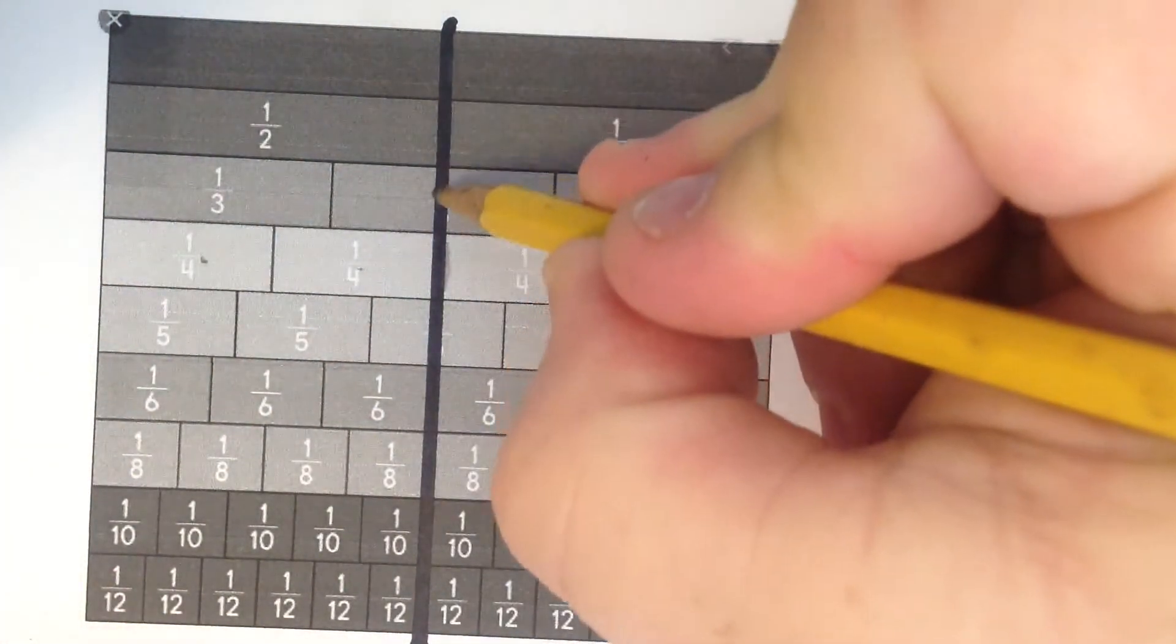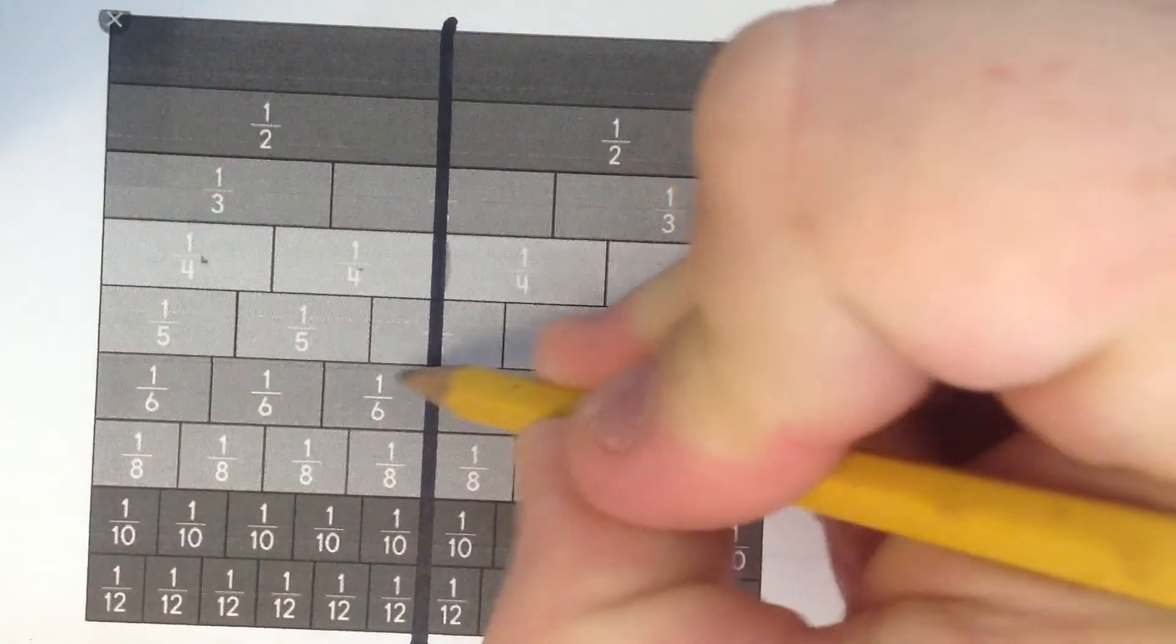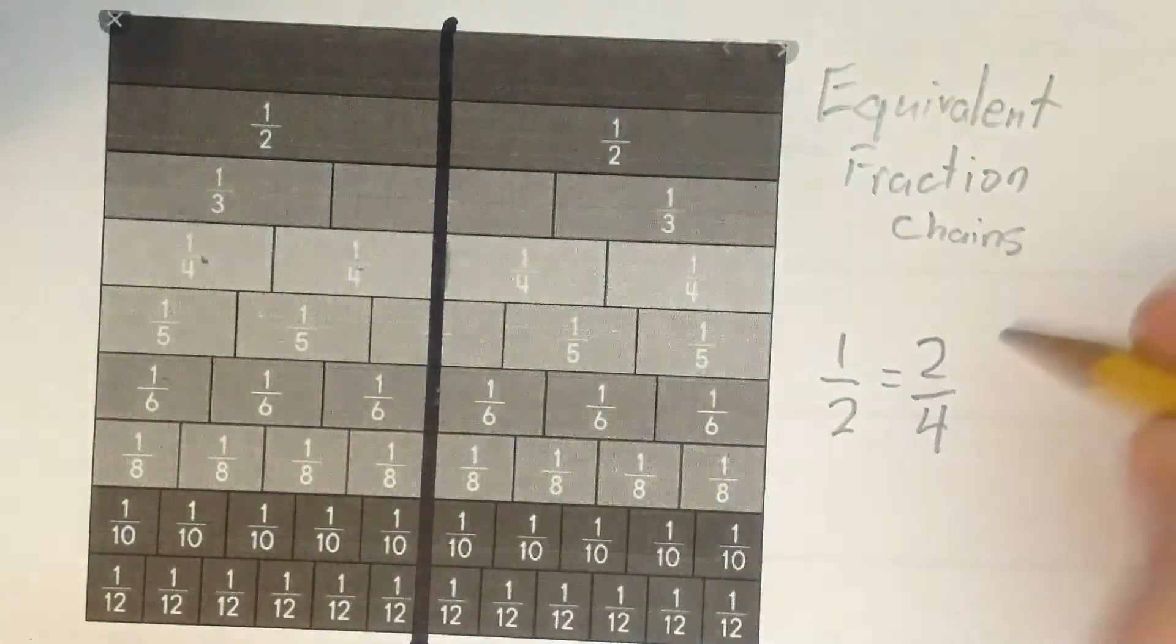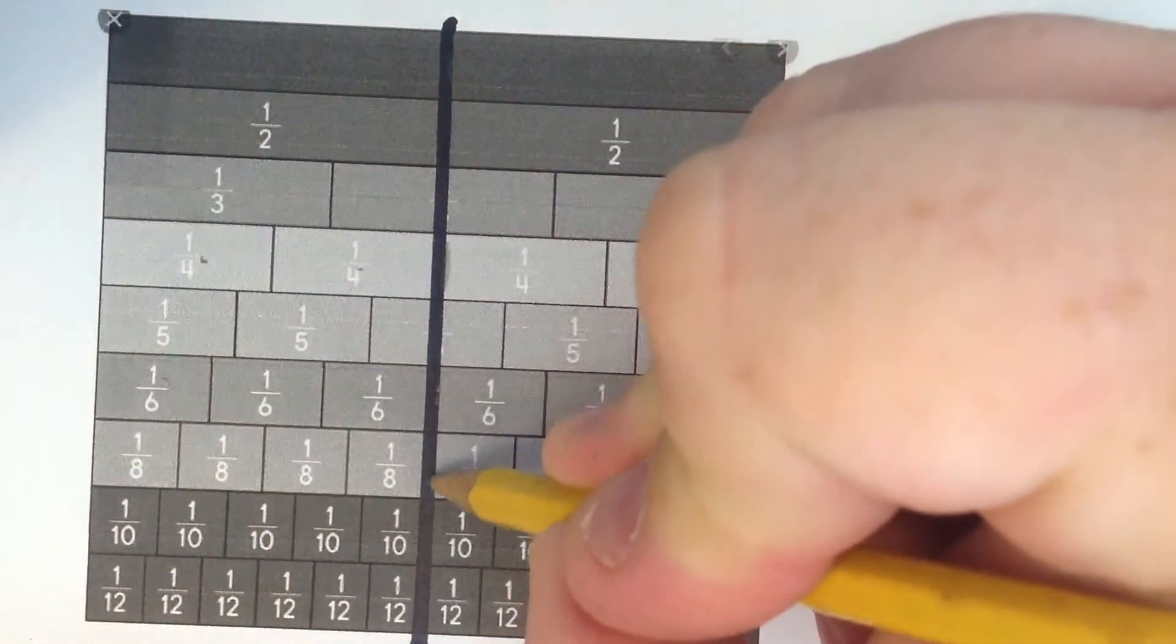All right, are there any others that land right? Oh, that one does, three-sixths. Let's see if there's any more.